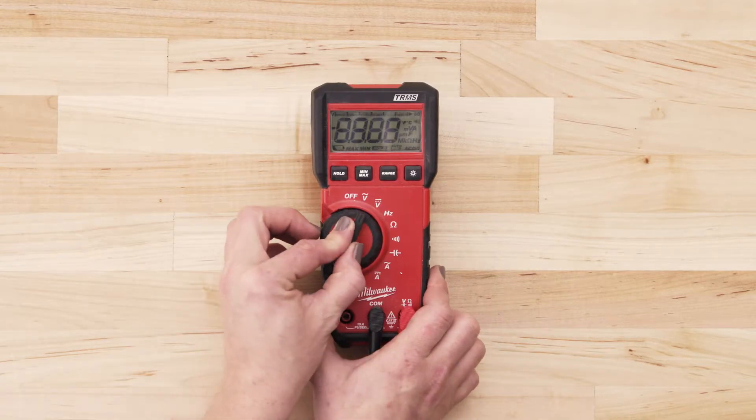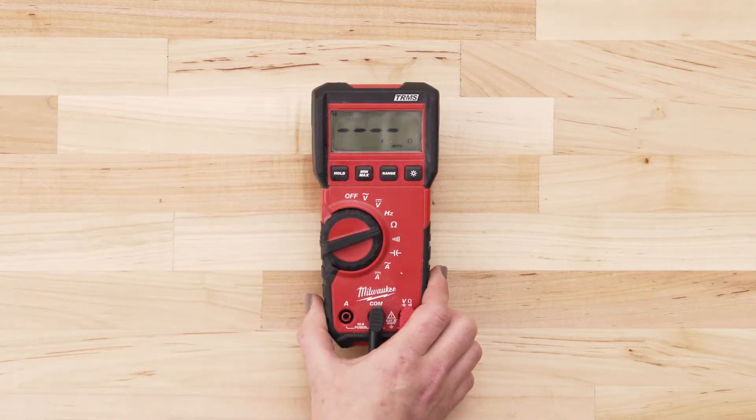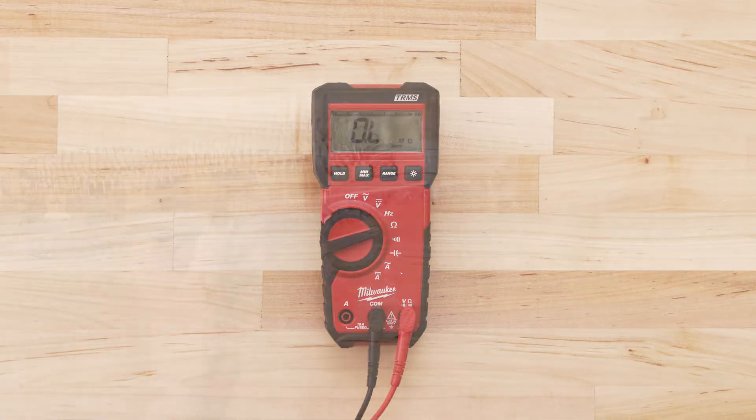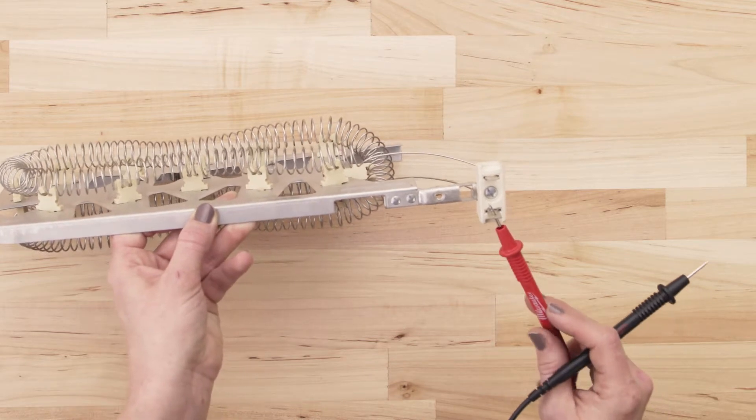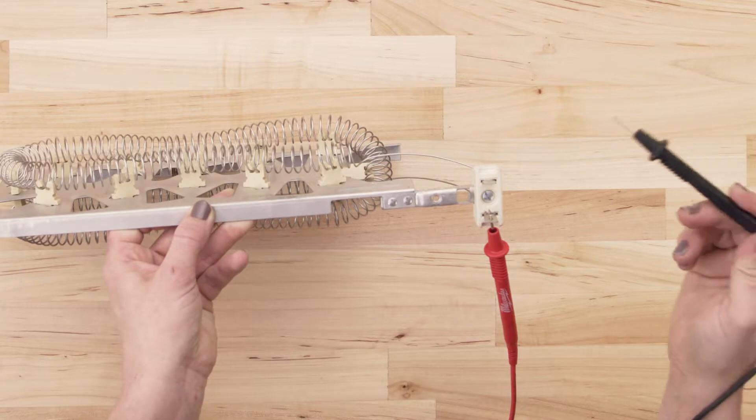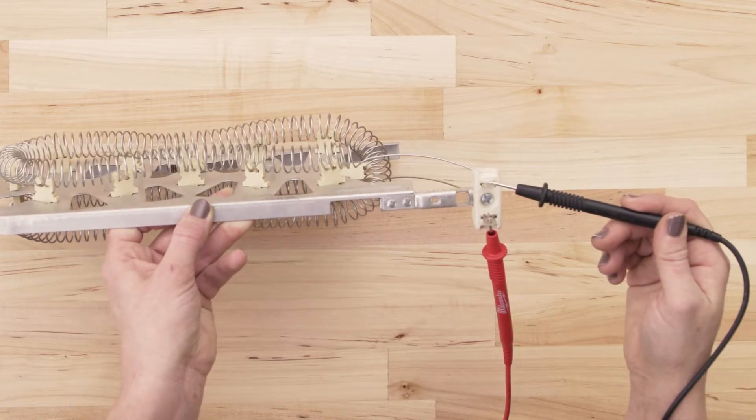If you're using a digital multimeter, also set the dial to the lowest ohms of resistance. To test for continuity, take the probe from the multimeter and touch it to one of the terminals. Now touch the second probe to the remaining terminal.